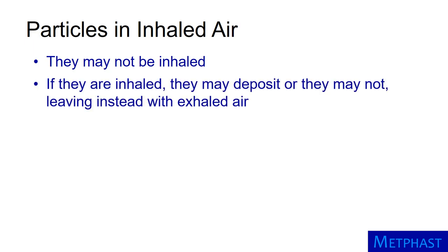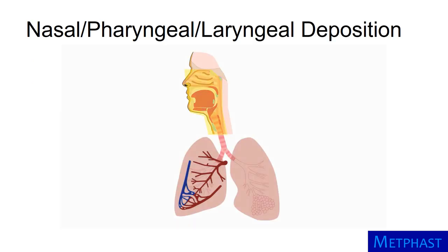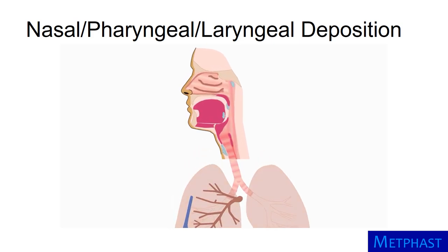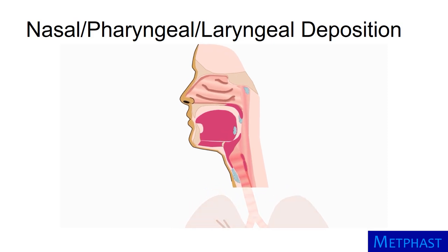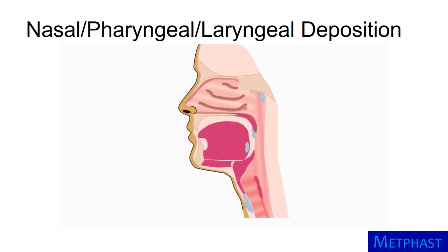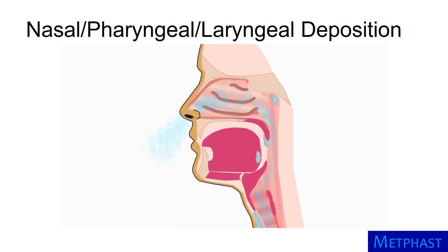For particles that are inhaled with the air, they may or may not deposit in the respiratory tract; if not, they will be breathed back out with exhaled air. In the nasal pharyngeal-laryngeal region of the respiratory tract, inhaled air moves through the nasal cavity with turbulent motion but with a relatively long residence time. The air speeds up as it passes through the bends of the pharynx and larynx. As the air is exhaled, it retraces its path through the larynx, pharynx, and nasal cavity.